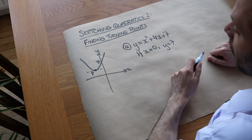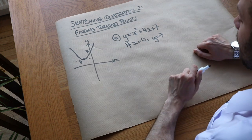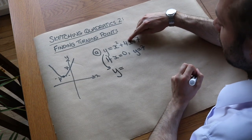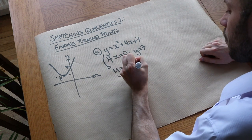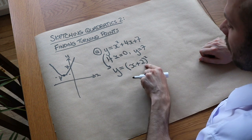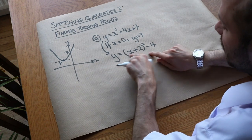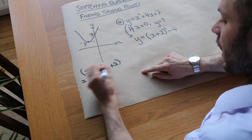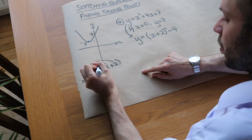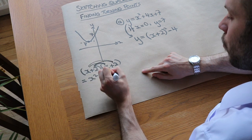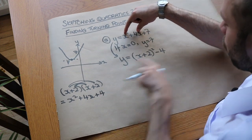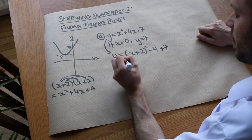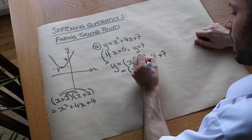To find the turning point, you complete the square. We halve the coefficient of x — half of four is two — and write x plus two squared. Then we subtract that number squared, because expanding x plus two squared gives x squared plus four x plus four, but we only want x squared plus four x, so we subtract the four. We still have the plus seven, giving us x plus two squared plus three.